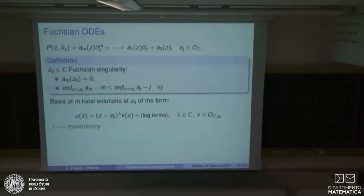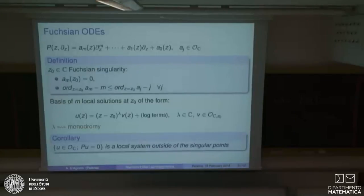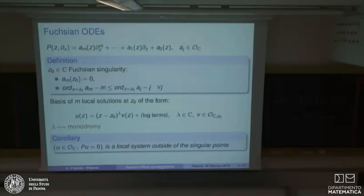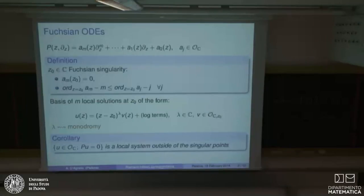The lambda appearing in each component of the basis contributes to the monodromy of the system of solutions. In particular, if you consider the set of holomorphic solutions of a Fuchsian ODE, it gives a local system outside of the singular points. So to an ODE you can associate a local system, which means a representation of the fundamental group of the complement of the singular points, and you would like to reconstruct the ODE starting from this data.